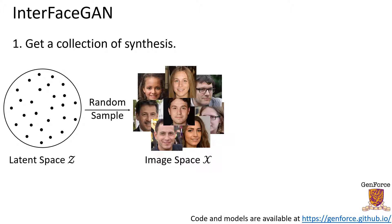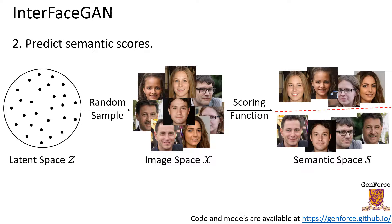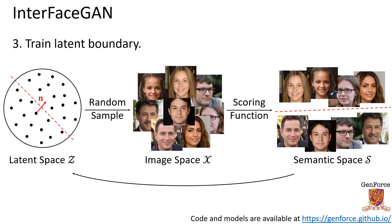InterFaceGAN consists of three steps. Step one: synthesize images with randomly sampled latent codes. Step two: assign semantic labels to the synthesized images, like male versus female. Step three: train a linear boundary in the latent space by using semantic labels as ground truth.